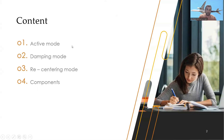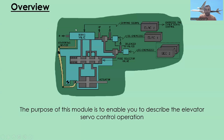The purpose of this module is to enable you to describe the elevator servo control operation — essentially, how the Airbus elevator is working. Looking at the schematic diagram, you can see the computers ELAC 2 and ELAC 1, which were described in the previous lesson, and also SEC 1 and SEC 2.